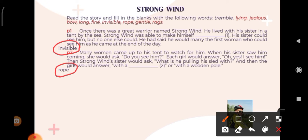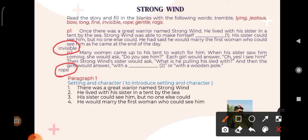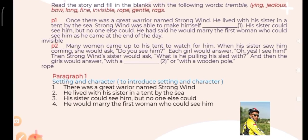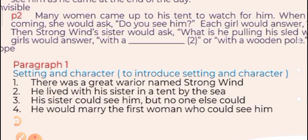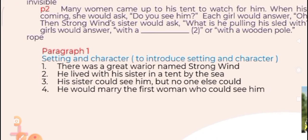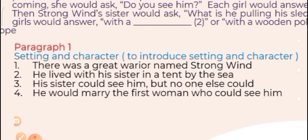Okay, and then next, as usual, we are going to discuss this paragraph. Paragraph 1 is a setting and character. Paragraph 1, as I told you, is orientation — yeah, it is to introduce setting and character. You can look at the first paragraph: 'There was a great warrior named Strong Wind' — itu menjelaskan bahwa di paragraph 1 ada siapa di situ. And then 'He lived with his sister in a tent by the sea' — ya, ini menunjukkan di mana mereka tinggal.